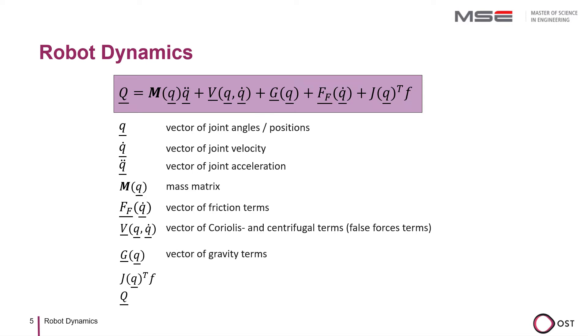The gravitational term describes the influence of gravity and depends on the position Q of the robot. Externally acting disturbance forces can be taken into account by transforming them into robot coordinates by multiplication with the transpose Jacobian matrix. The result of the equation is the generalized robot forces Q in capital letters which represent the actuation forces that are imposed on the robot.